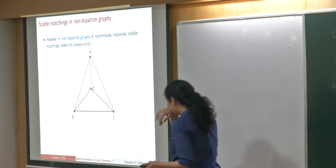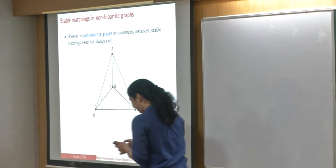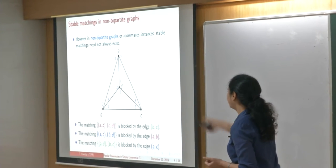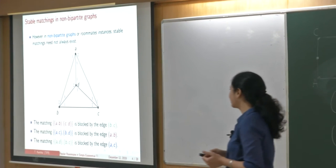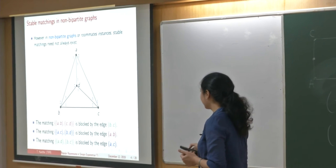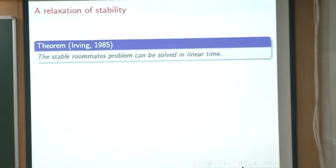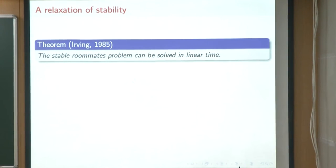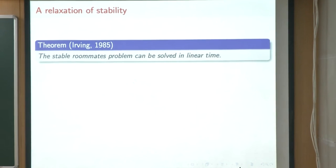This very same instance shows that. As I already discussed with Sanjay, any stable matching here has to be perfect because it is a complete graph on an even number of vertices, and we could just run through the three perfect matchings — each of them has a blocking edge. So there is no stable matching in this graph. Does a roommate instance admit a stable matching or not? This was answered by Rob Irving in 1985, who showed a linear time algorithm: given an instance, we can decide in linear time if there is a stable matching and if so, find one.